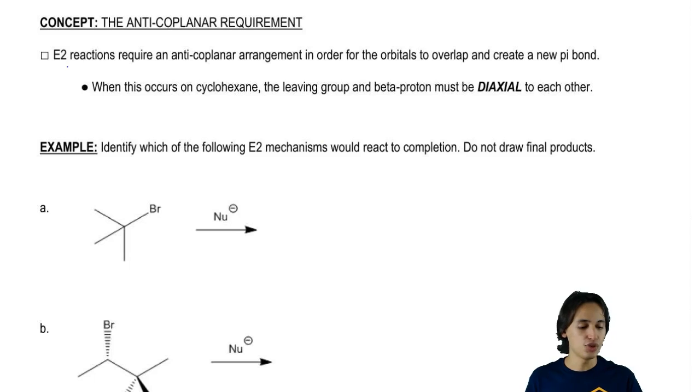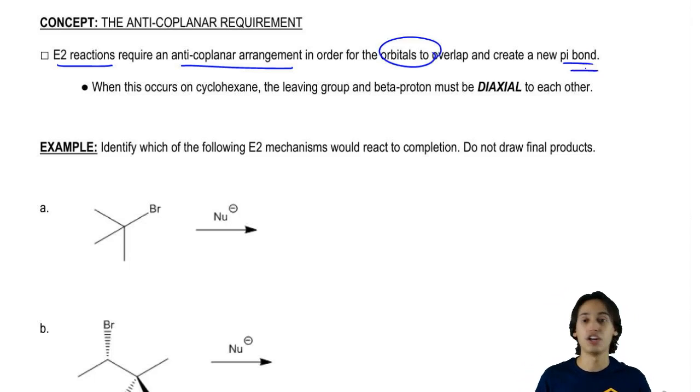As I told you guys already, E2 reactions are going to require an anti-coplanar arrangement between the leaving group and the beta hydrogen in order to go to completion. That's because the orbitals need to overlap in a certain way in order to make a new pi bond, which is that double bond that you get at the end.